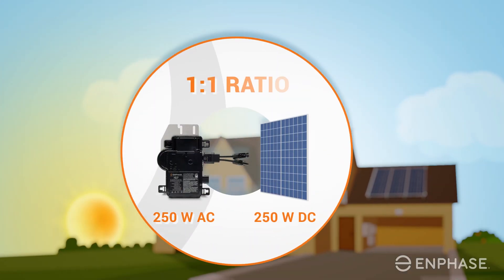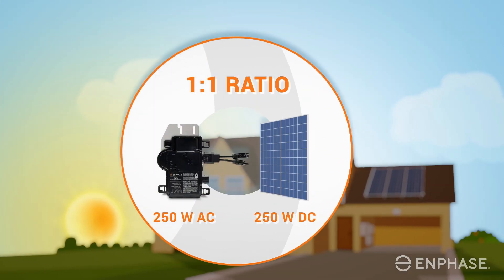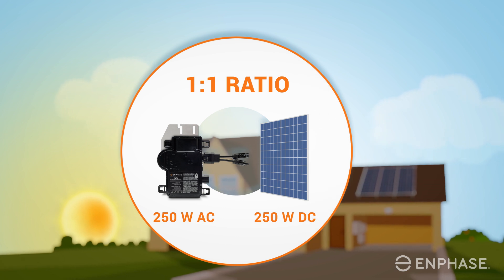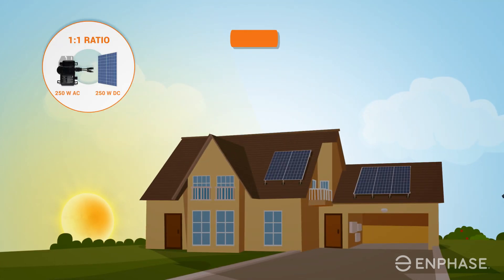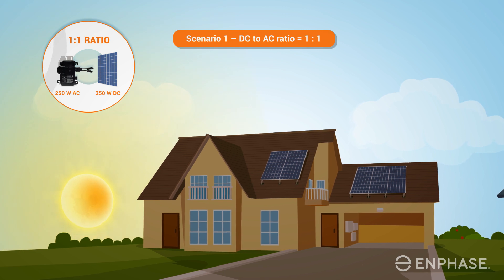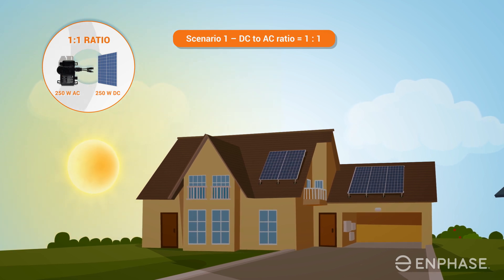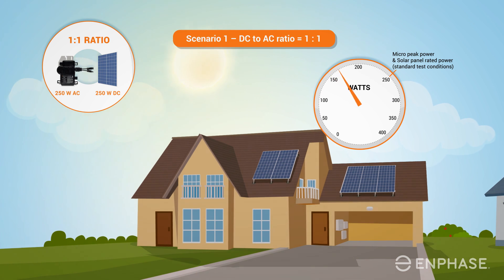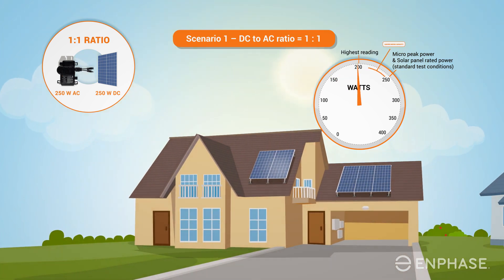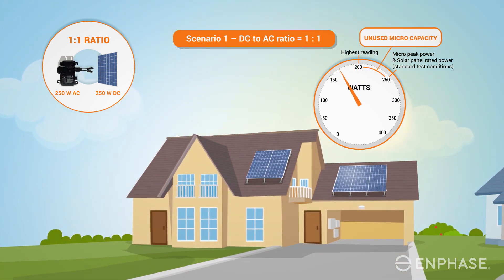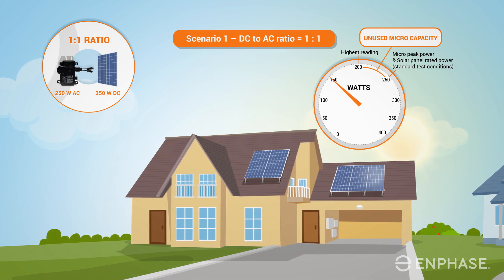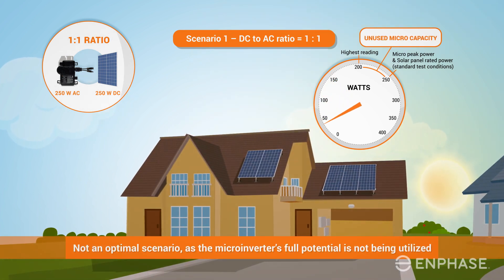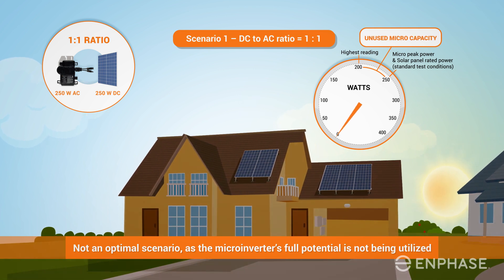Here we have a pairing where the DC rated power of the solar panel is the same as the AC peak power of the microinverter. This is considered a DC to AC ratio of 1 to 1. During the sunniest time of year, when a solar panel's power output peaks, the highest level is well below the maximum capacity of the microinverter. This scenario is not optimal, as the microinverter's full potential is not being utilized.